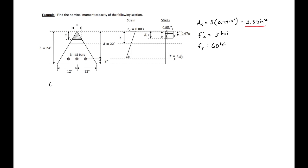We will start with equilibrium, and we'll have compression equal to tension. On our compression side, we'll have 0.85 f'c as the stress distributed over our rectangular stress block. The stress block in this case has a triangular shape, so we will have a times a over 2 as our area.